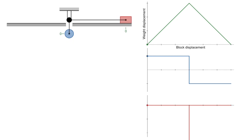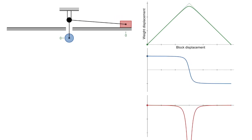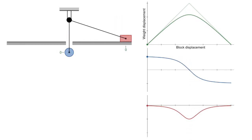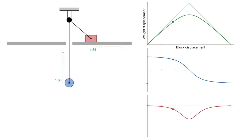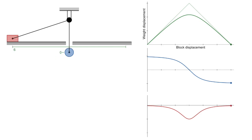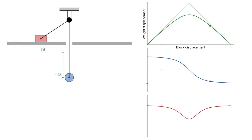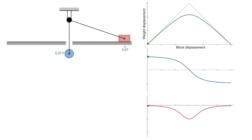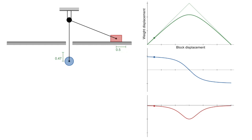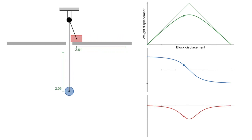Let's go back to the problem we were given. What we can see from the top graph is that the displacement of the weight is no longer equal to the displacement of the block — it's always less. At first the difference is very small, but as the block approaches the pulley, the difference gets more dramatic, until the movement of the block results in barely any movement of the weight.